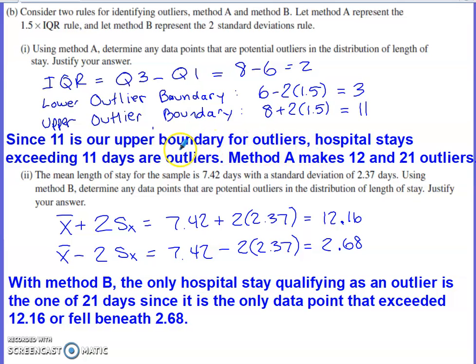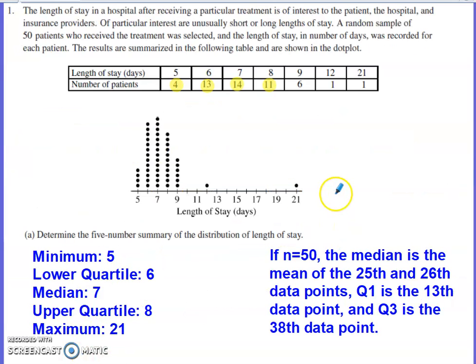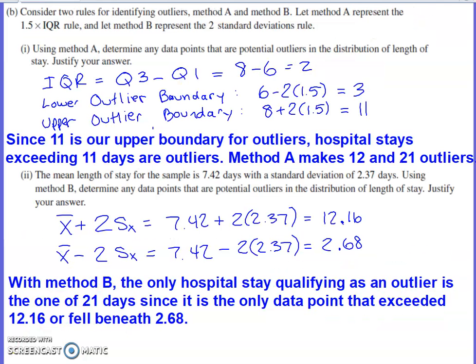11 is the upper outlier boundary. Hospital stays exceeding that number of days are outliers. And if we go back and look at the data set, there are two that exceed 11. The length of 12 days and the length of 21 days would qualify as outliers under method A's test for outliers.